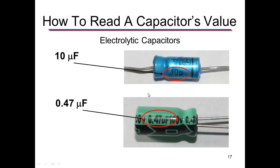So let's talk about how to read a capacitor's value. Here we have electrolytic capacitors and the good news is that's pretty easy to read. You literally look on the capacitor and find the number — here you can see it circled in red. It says 10 and there's a little mu, so that means it's microfarads. This one's an axial capacitor and this is a radial capacitor, but again it's printed directly on the capacitor and it says 0.47 microfarads. So you read it just directly off the capacitor.